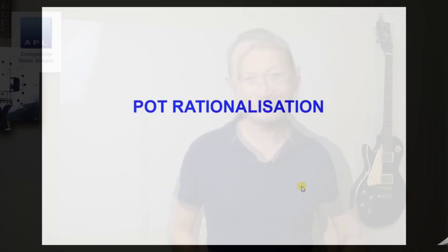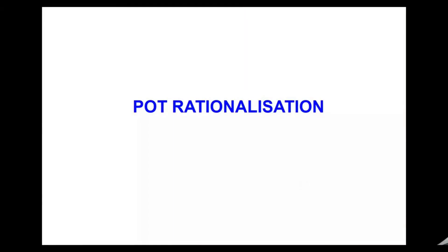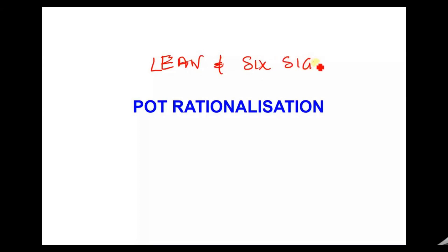They are all available from lulu.com and the links are in the video below. Welcome to Complexity Made Simple and the latest case study: part rationalisation. This is a great case study to show you where lean and six sigma meet, why they're both trying to do similar things, and essentially it is the removal of variability.